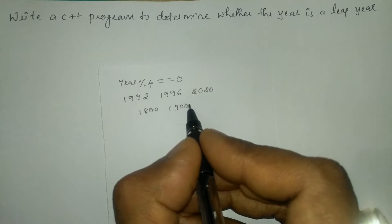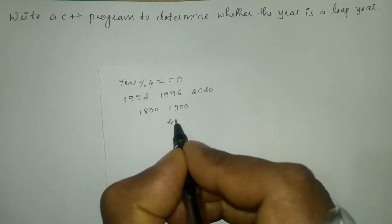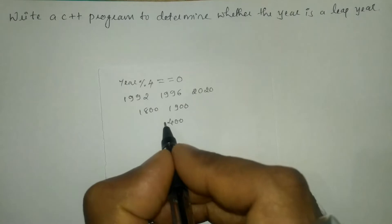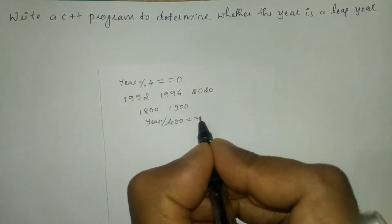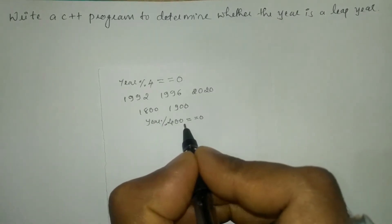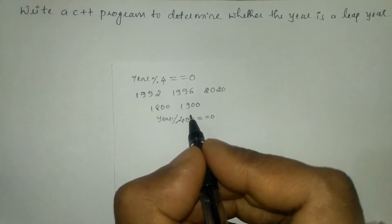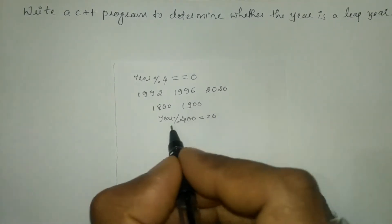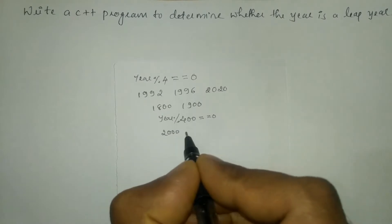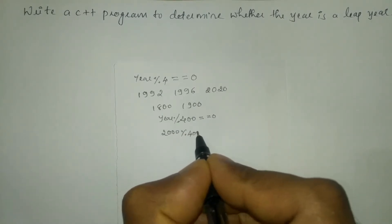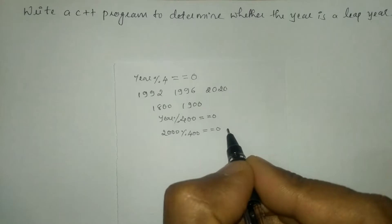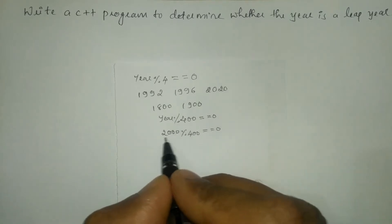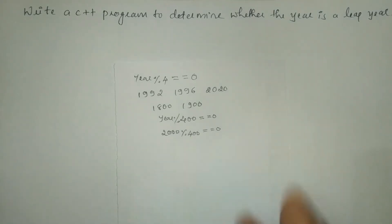Some years which are divisible by 400 — meaning if I divide the year by 400 and it gives the remainder zero — such years are called leap years. For example, if I use 2000 and divide it by 400, this gives us the remainder 0, so such years are called leap years.